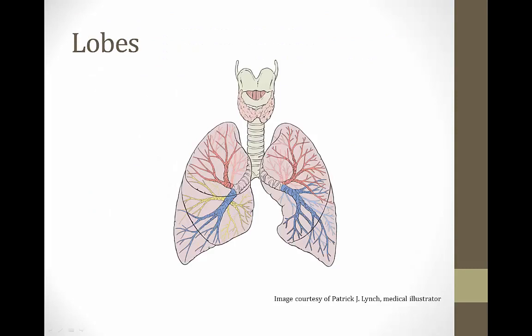Now let's talk about the lobes of the lungs. On a chest x-ray, remember that the right side of the image is the patient's left side. The right lung has three lobes — upper, middle, and lower. The left lung only has two lobes — upper and lower — you can think of the middle lobe as being obliterated by the heart.